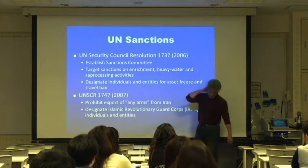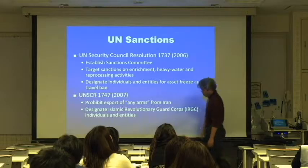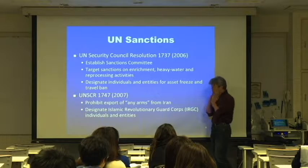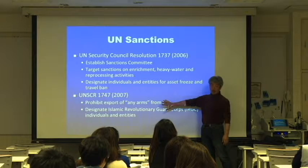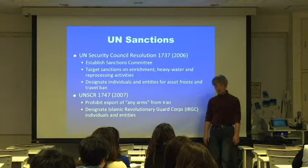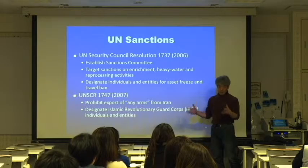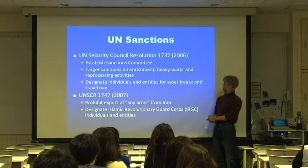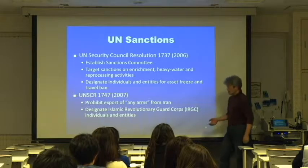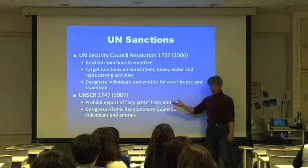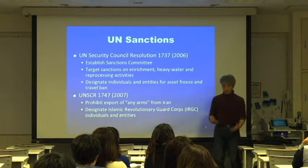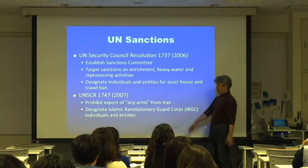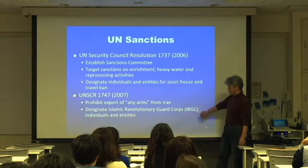Resolution 1747, adopted in 2007, added sanctions measures for Iranian arms export. Iran gets money from exporting arms — tanks, artillery, small firearms, etc. This resolution prohibits any arms, even pistols or bullets, from being exported from Iran. It also designated the Islamic Revolutionary Guard Corps, IRGC.